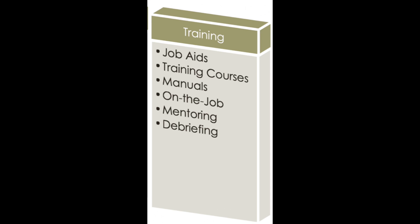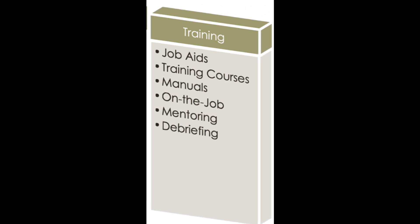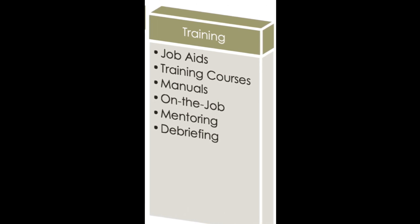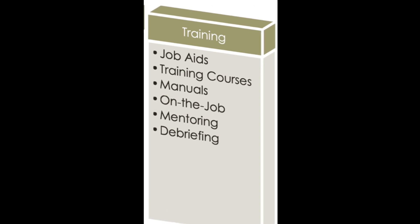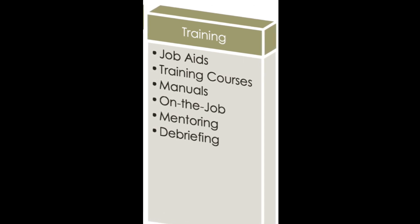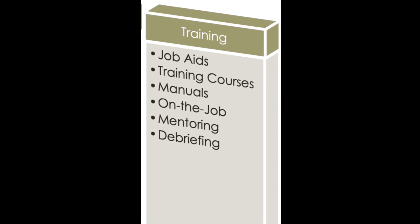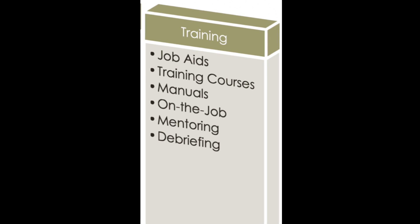Now let's say this programmer does have all the communication items checked off — we're good with that box. Now let's move to the training box. Are there job aids the employee can use to reference how to name code properly? Is there training or one-on-one coaching we can provide to develop the naming skills? Are we taking the time to reflect and debrief how the programmer is progressing? If the answer is no to any of these questions, we need to make sure those resources are indeed present.